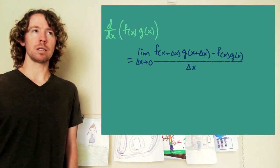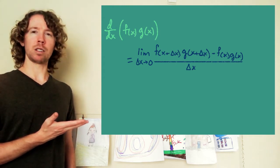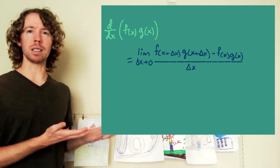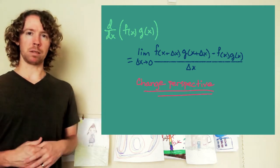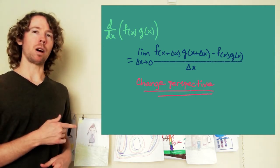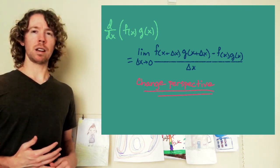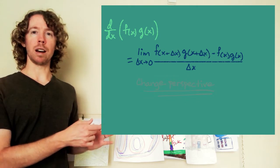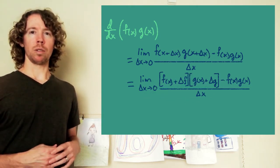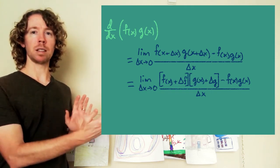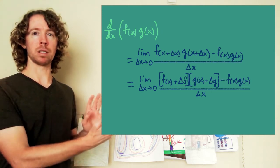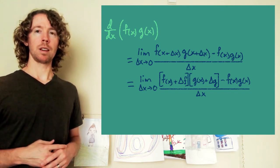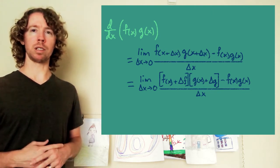There's nothing I can directly simplify from that form, so I'm going to change perspective. Instead of writing f(x + Δx), I'll rewrite it as f(x) plus delta f — the original value plus the change. So y2 becomes (f(x) + Δf)·(g(x) + Δg), and I still subtract f(x)·g(x) and divide by delta x, taking the limit as delta x goes to 0. Now I have something I can actually multiply out in the numerator.